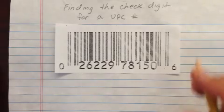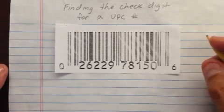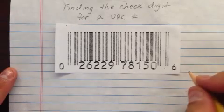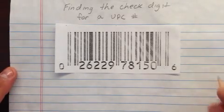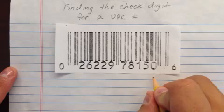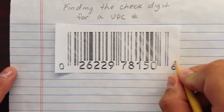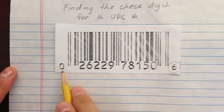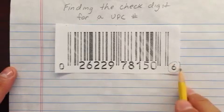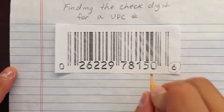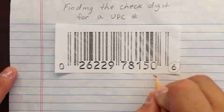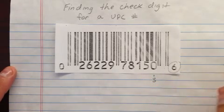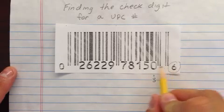For the UPC numbers, remember we're going to be multiplying each even-position digit starting from the right by 3. This is the check digit right here. Make sure you include the 0 and all the other numbers in the code. So multiply by 3 for each of these even positions.